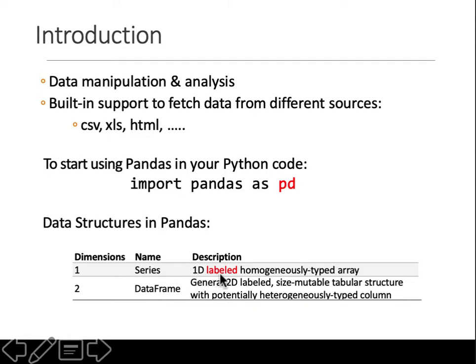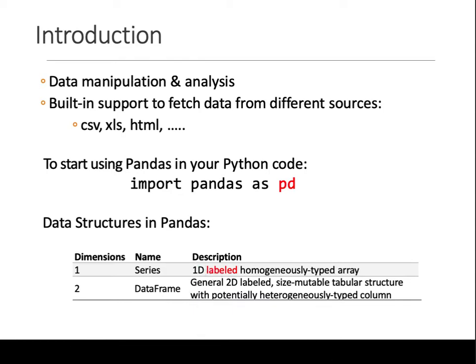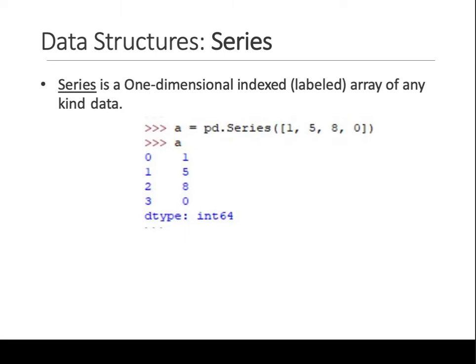In pandas, the array equivalent is called a Series, and the other structure is called a DataFrame. A Series is a labeled homogeneous one-dimensional array. For 2D and higher data structures that can be heterogeneous, you use a DataFrame. This is a little more powerful than numpy because you can have heterogeneous data in columns.